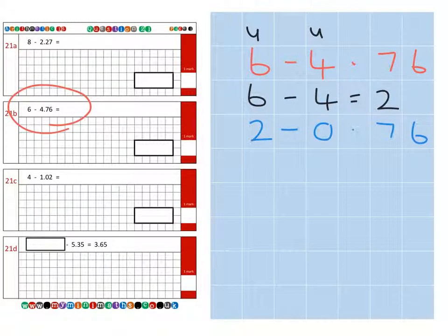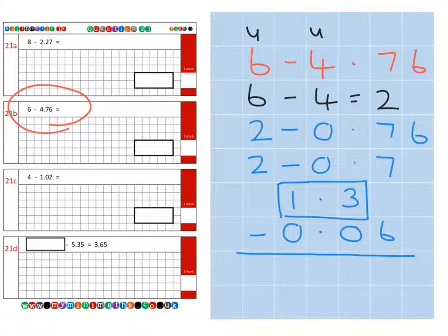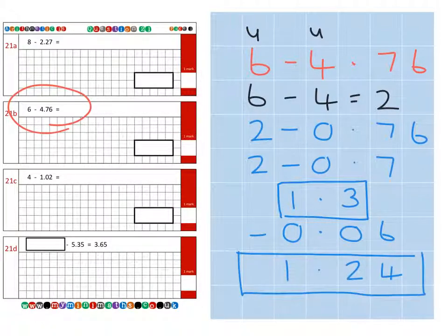And for this we could take away the 0.7 part first from the 2 units, and that would give us 1.3. Then we need to take away that 0.06 which would leave us with 1.24 as our final answer.